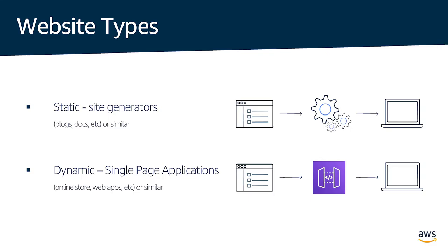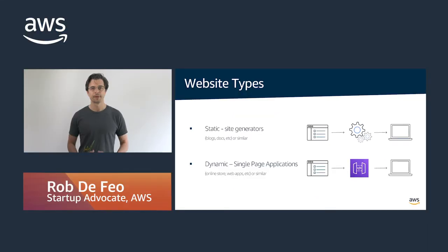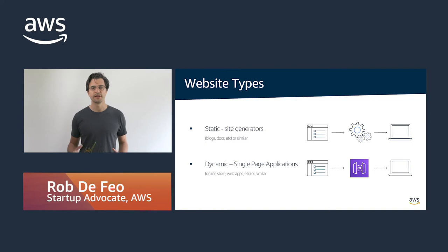Data or external resources are examples of something that can change the content of a page. Imagine the product page for our comic books has the price, inventory count and a shipping calculator. These values come from application programming interfaces, or commonly known as APIs. Websites use JavaScript to communicate via the API to these external resources and then change the web page content or layout based on the results.